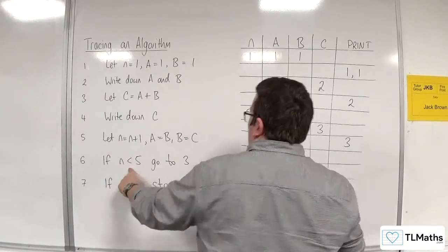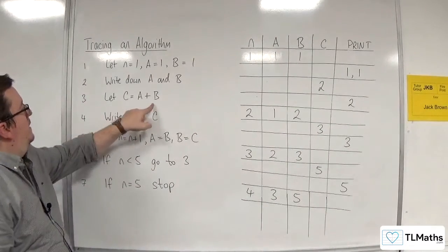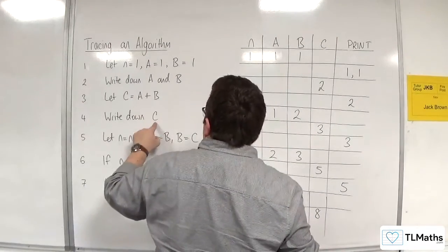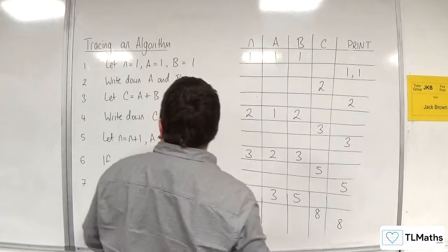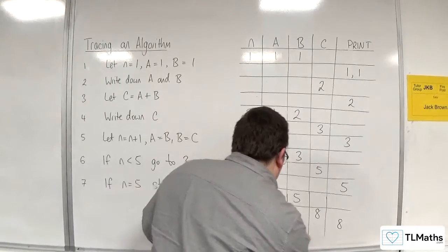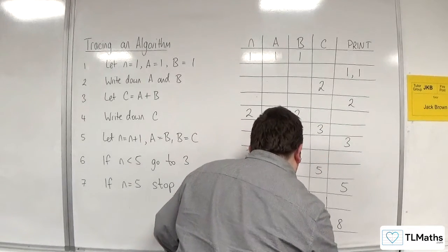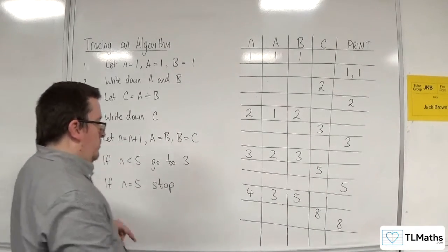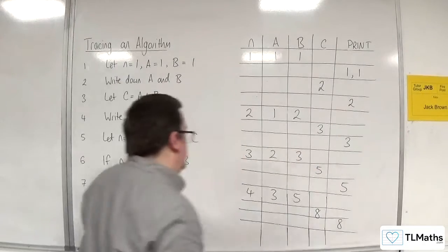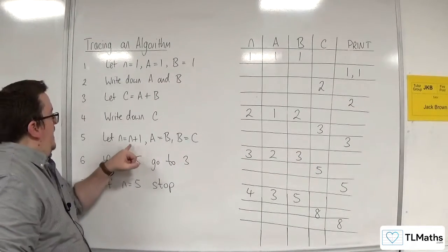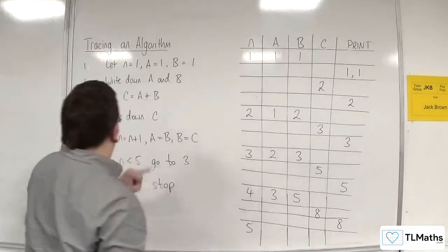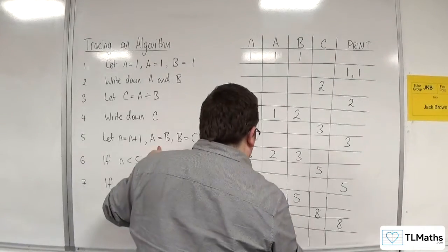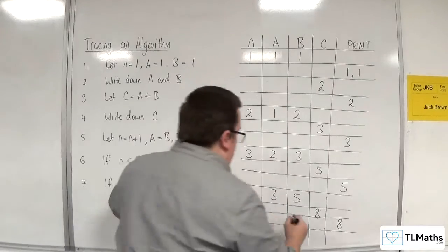If N is less than five, which it is, because it's four, we go to step three. Let C be equal to A plus B, so that's eight. We write down C. And then, almost out of space. And then finally, let N be equal to N plus one, so five. A is equal to B, so that's five. B is equal to C, so that's eight.